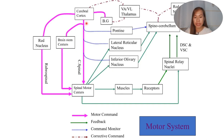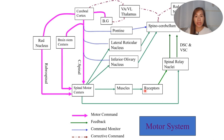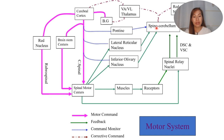Going back to the slide: from the cerebral cortex, there are different motor commands — direct and indirect — going to the spinal motor centers, which stimulate muscles to produce intended voluntary movement. Receptors such as the muscle spindle and Golgi tendon organ perceive length adjustment and tension, and relay it to the spinal relay nuclei of the spinal cord, then it reaches the spinocerebellum area. This then sends corrective commands to the red nucleus or thalamus, which goes back to the cerebral cortex, which then sends signals to correct the specific movement.